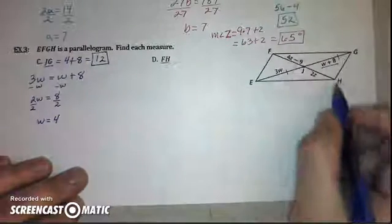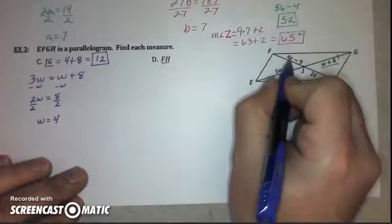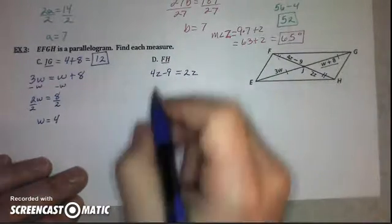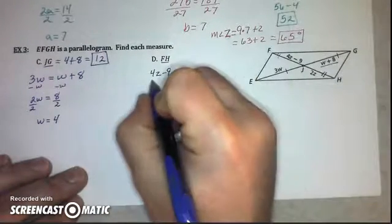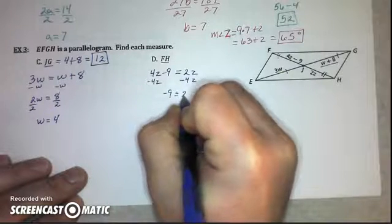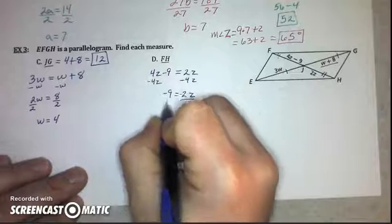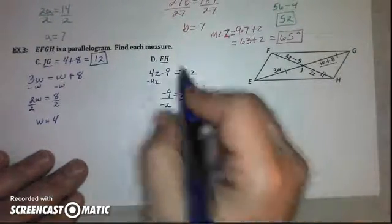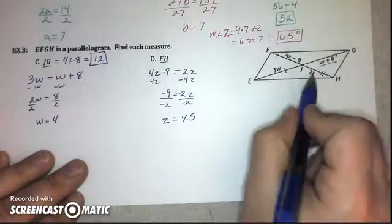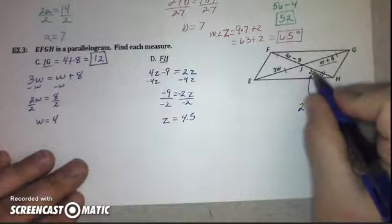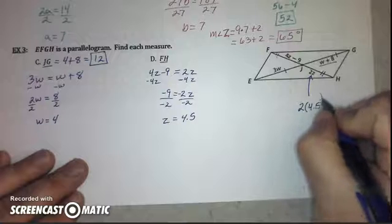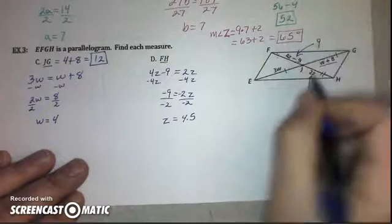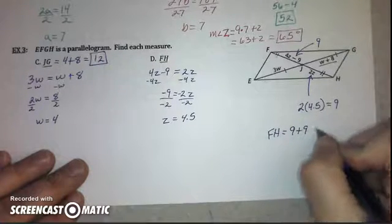To find FH, we use the other diagonal. The diagonals bisect each other, so the two halves are congruent. Setting 4Z minus 9 equal to 2Z and solving gives Z equals 4.5. To find FH, I plug Z into the simpler expression: 2 times 4.5 equals 9, so JH is 9, and FJ is also 9. Therefore FH equals 9 plus 9, which is 18.